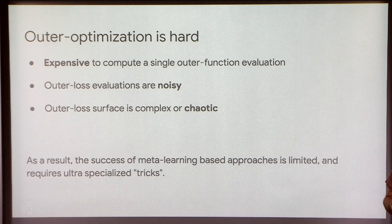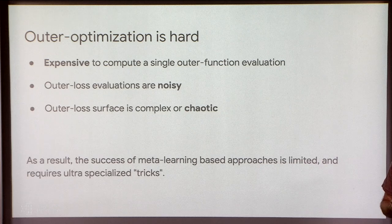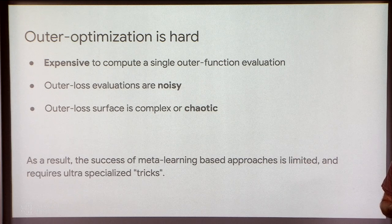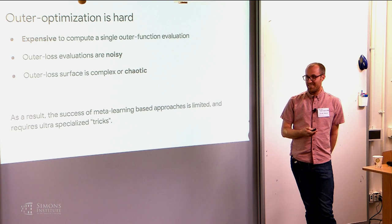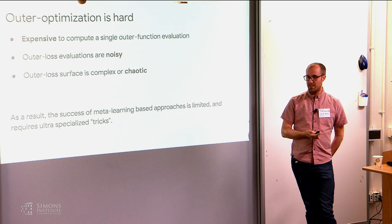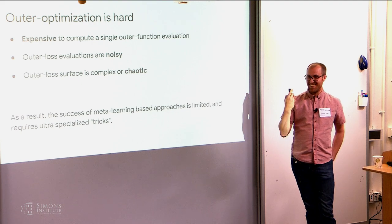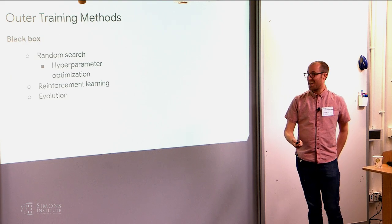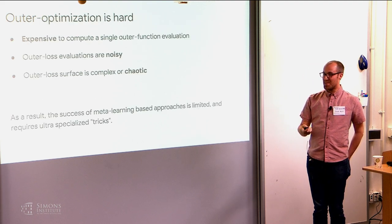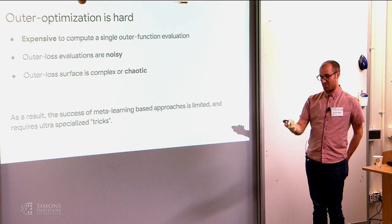It seems difficult to even imagine trying to backprop through one step of the outer loop — you have to think about all the updates you ever made, try to change them, and see the histories. The short answer is just automatic differentiation. It is kind of brutal, and we're going to use an example of why it's brutal.